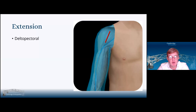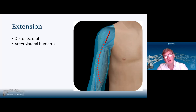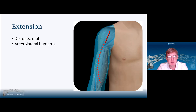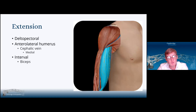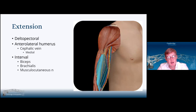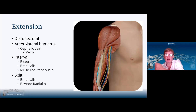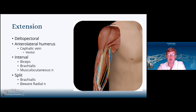As for extension, the delta-pectoral approach goes beautifully into the anterolateral approach to the humerus, and that's another reason why I take the cephalic vein medial. If I start off delta-pectoral, I can follow it around into the humerus and take my biceps and cephalic vein medial. You then move biceps medial, find the musculocutaneous nerve, and you can simply split brachialis in the midline between its two nerve structures. Watch out for the radial nerve — if the arm is in some internal rotation you can cross the path of the radial nerve. Make sure the arm is pointing forwards so that you're splitting brachialis in its midline.